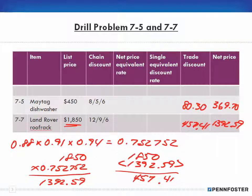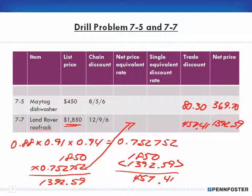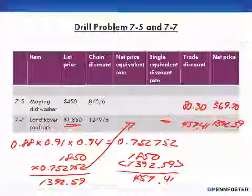Remember, that 0.752752 is the net price equivalent rate. To find the single equivalent discount rate, just subtract it from 1. I'll move on to 7-9 in the next video.